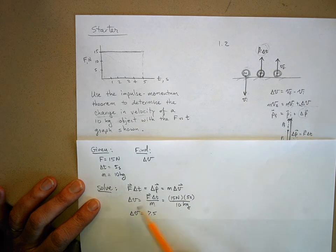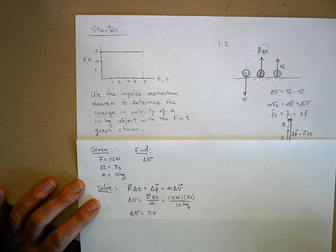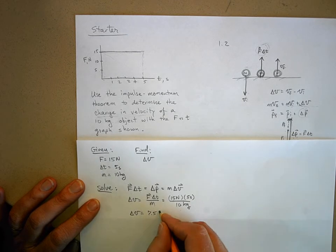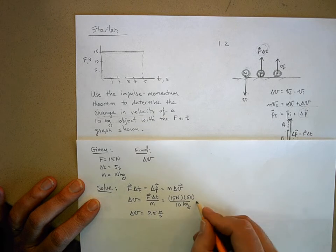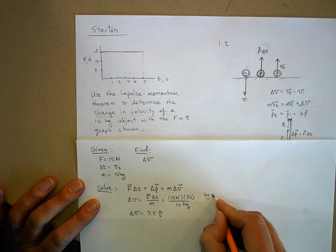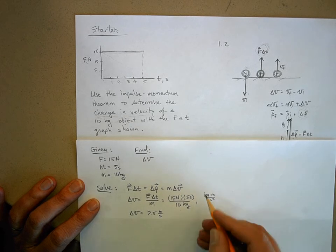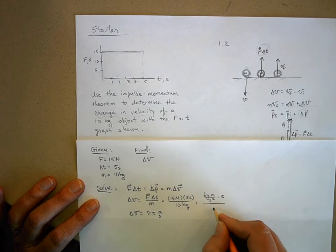And what should the units here be? Well, what is delta V? That is a change in velocity. Okay, what units does velocity have? And we can check that. What's a newton? A newton is a kilogram meter per second squared. Those are the fundamental units for newtons. Times seconds divided by kilograms.